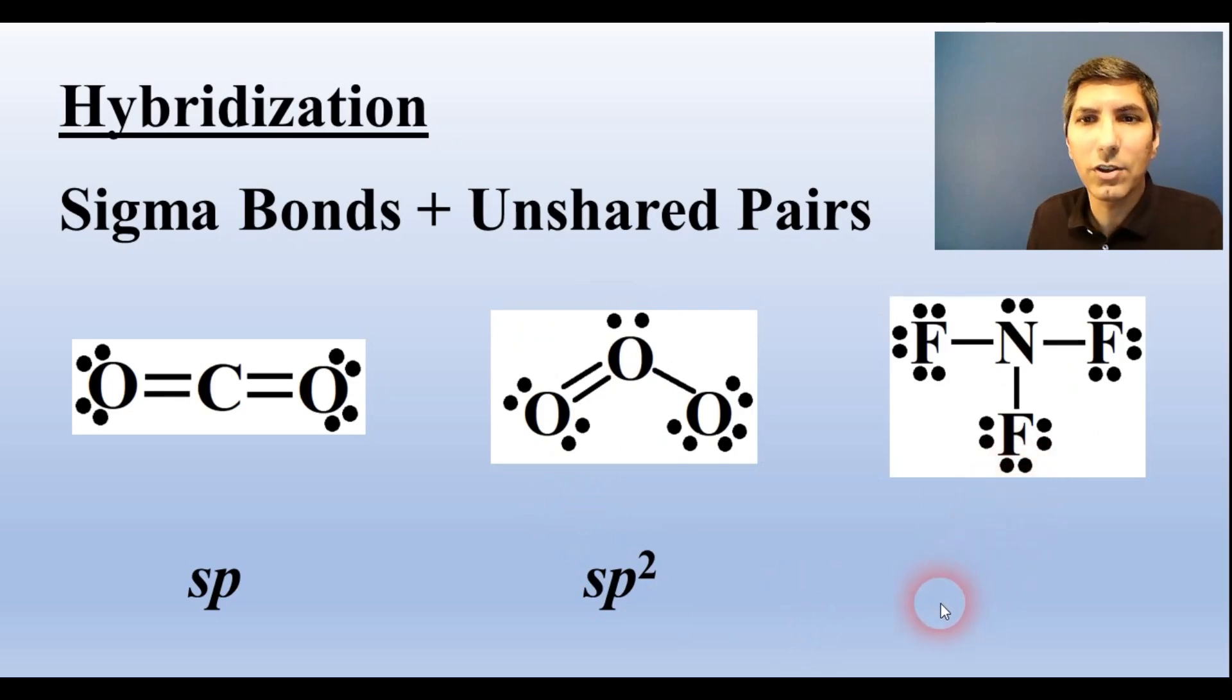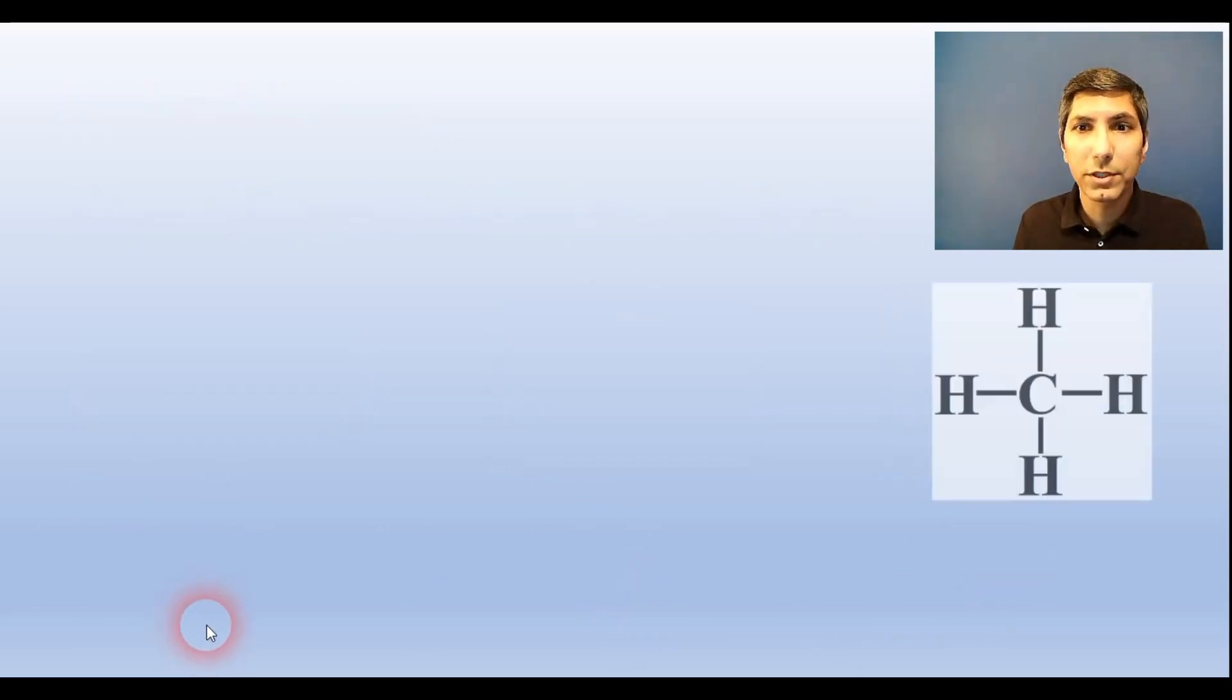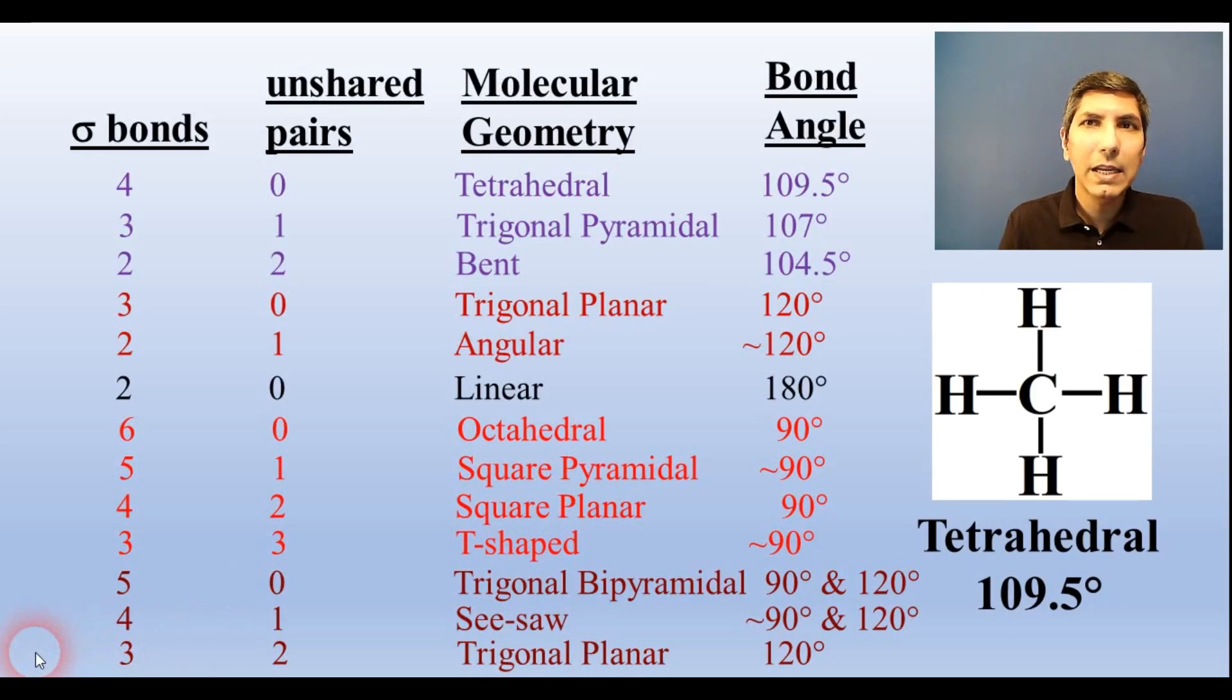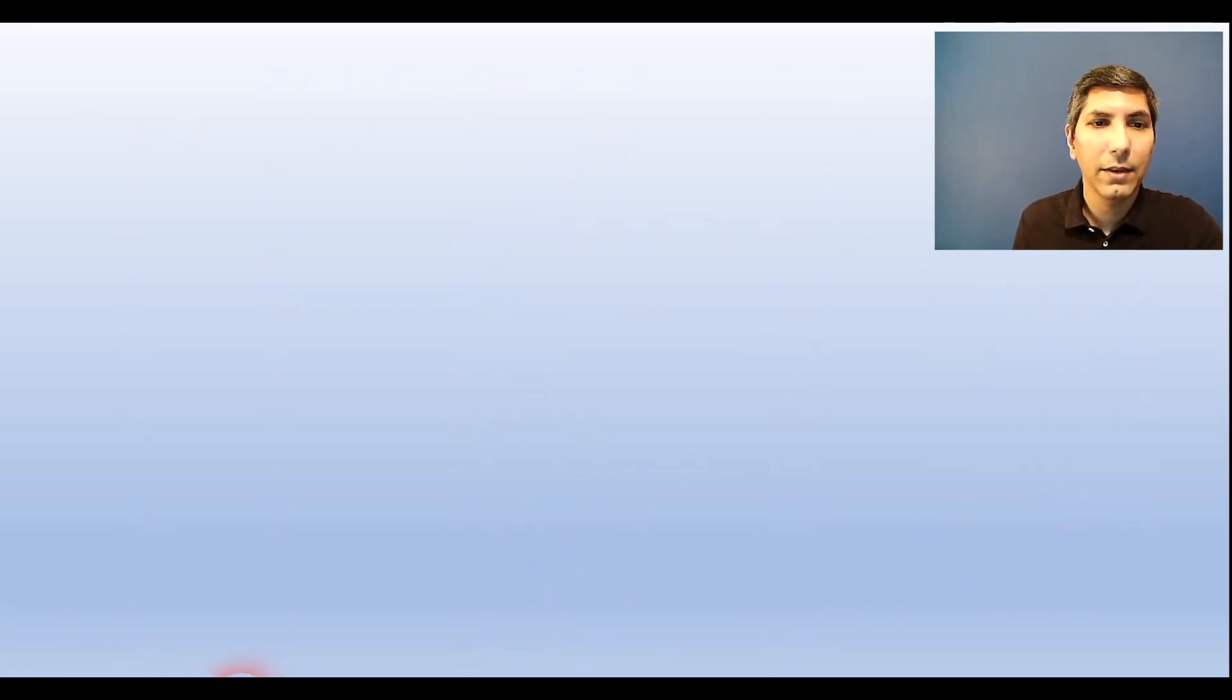You need to know the molecular geometries and bond angles for molecular structures. For example, if a molecule has four sigma bonds and no unshared pairs on the central atom, it has a tetrahedral shape and its bond angle is 109.5 degrees. Now the AP readers are normally a little bit more lenient on bond angles than most classroom teachers. So the bond angles they generally expect you to know are 109.5 degrees, 120 degrees, 90 degrees, and 180 degrees. Here's a more complete list of those molecular geometries and bond angles.